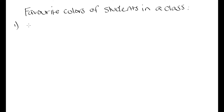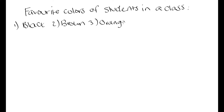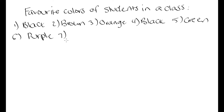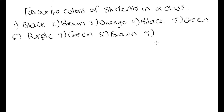Student 1's favorite color is black, student 2's is brown, student 3's is orange, student 4's is black, student 5's is green, student 6's is purple, student 7's is green, student 8's is brown, student 9's is green, and student 10's is orange. So these are all the favorite colors of our 10 students — this is an example of a qualitative data set.